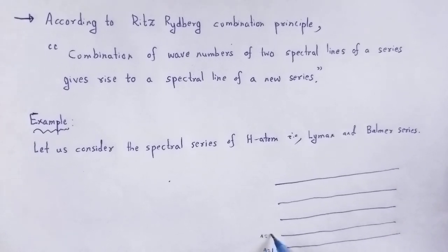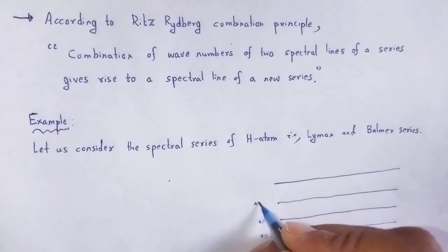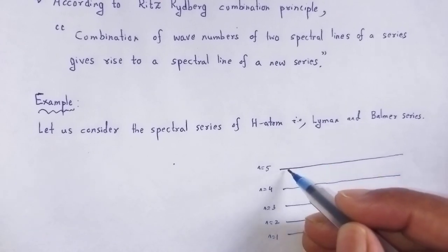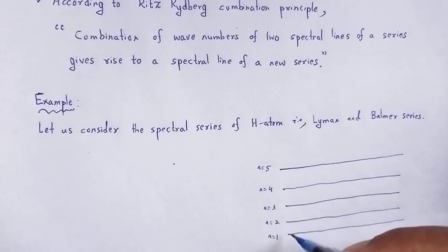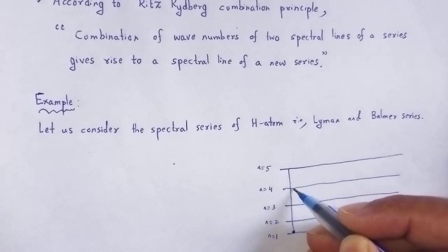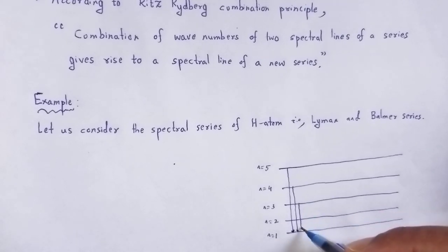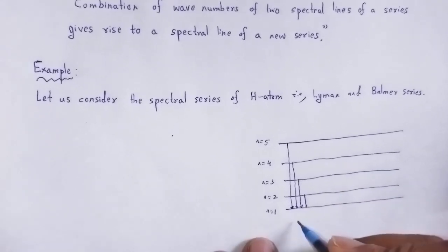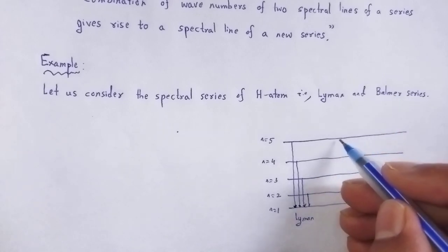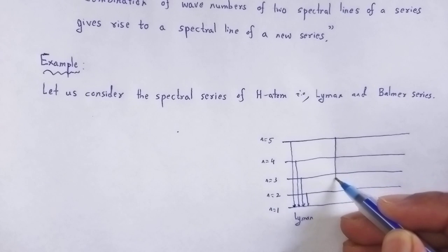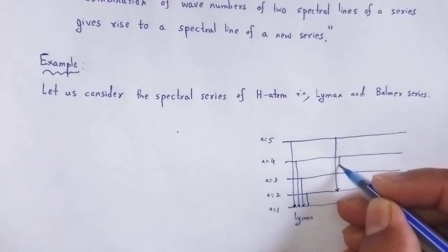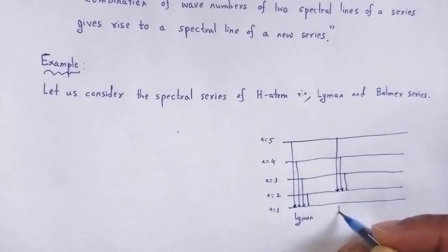We have energy levels n equal to 1, 2, 3, 4, and 5. For the Lyman series, the transitions are from higher energy levels down to the energy level corresponding to n equal to 1. For the Balmer series, the transitions are from higher energy levels to the lower energy level corresponding to n equal to 2.